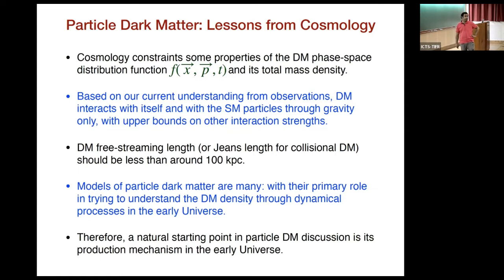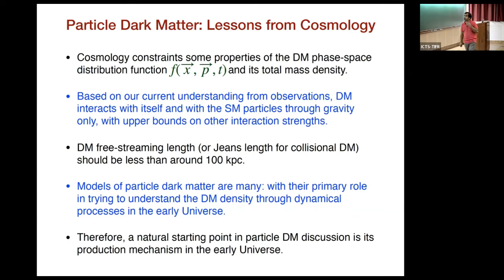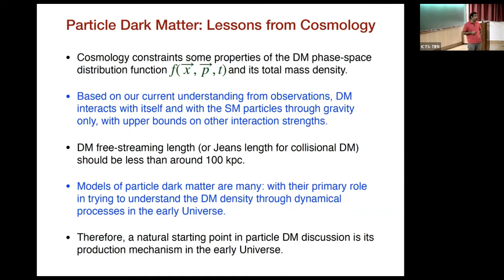Cosmology constrains some properties of the dark matter phase space distribution function and its total mass density. Based on our current understanding from observations, we know that dark matter interacts with itself and with standard model particles through gravity only — of course, there are upper bounds on other interaction strengths. From structure formation considerations, we know that the free-streaming length for collisionless dark matter should be less than around 100 kiloparsecs.